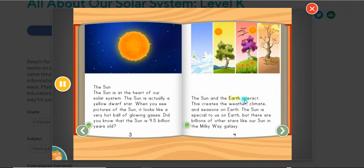The Sun and the Earth interact. This creates the weather, climate and seasons on Earth. The Sun is special to us on Earth, but there are billions of other stars like our Sun in the Milky Way galaxy.